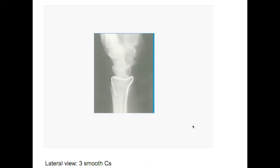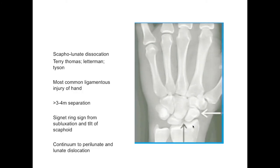Also consider the lateral view. It's generally used to look for a triquetrum fracture or a lunate dislocation. The radius forms three cups: the radius forms a cup with the lunate, with the capitate, and then with the third metacarpal — three cups stacking on each other, that's the way it should look. There should be less than three millimeters separation between the carpal bones in the proximal row. If it's much more separated, that's an indication of ligamentous injury.